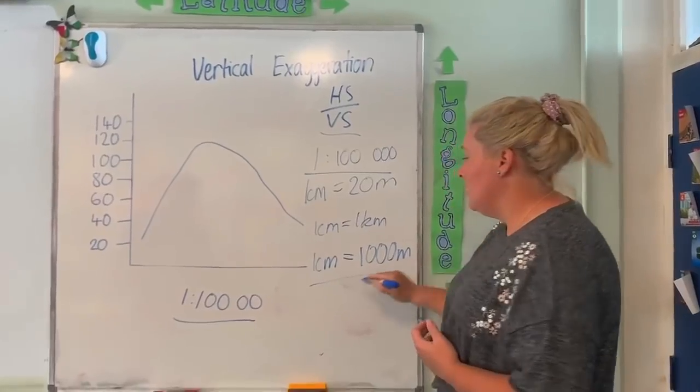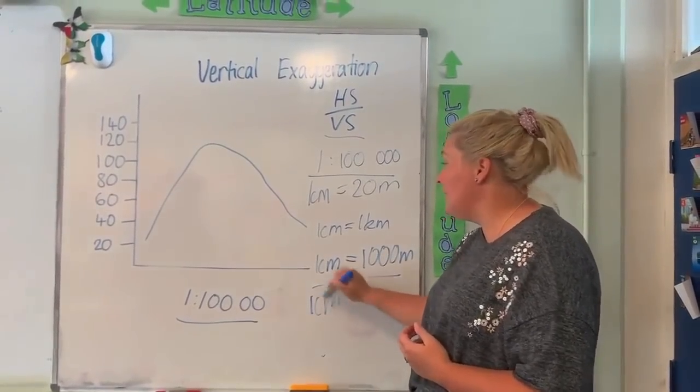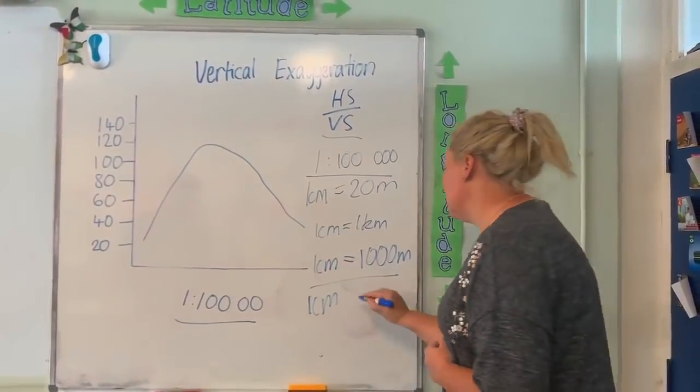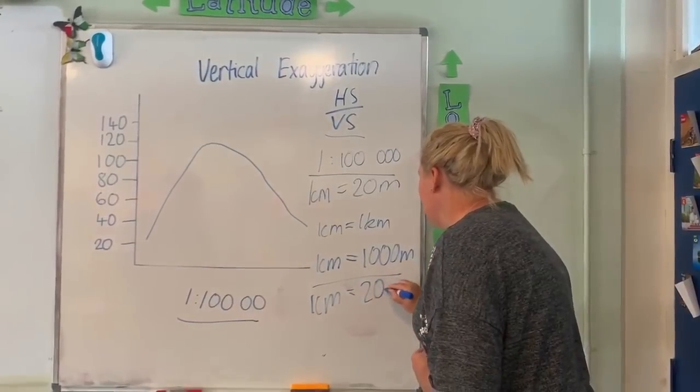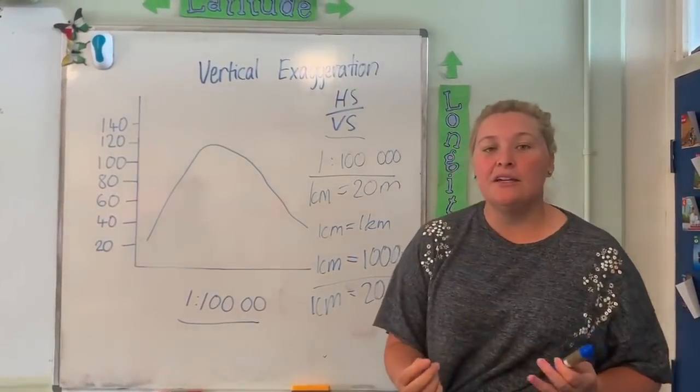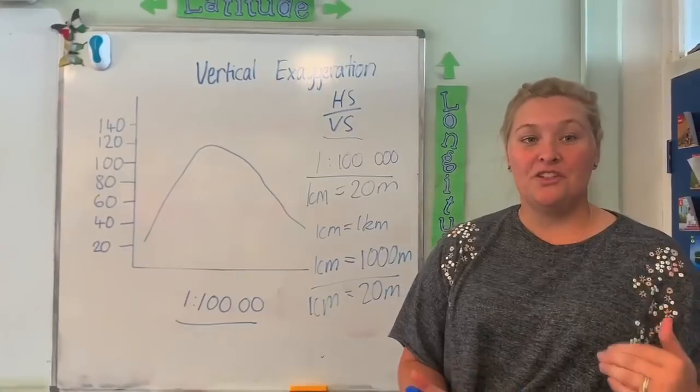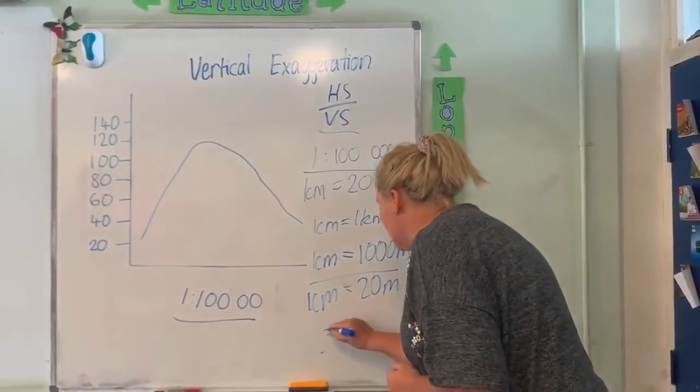And on the bottom, 1 cm for our vertical scale is equal to 20 metres. All we need to do then is get our calculators out, put 1,000 over 20, which is going to give us an answer of 50.